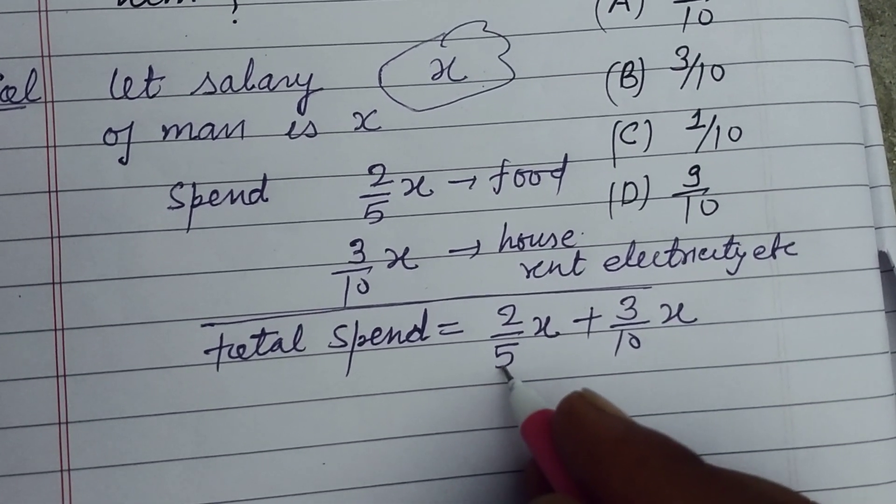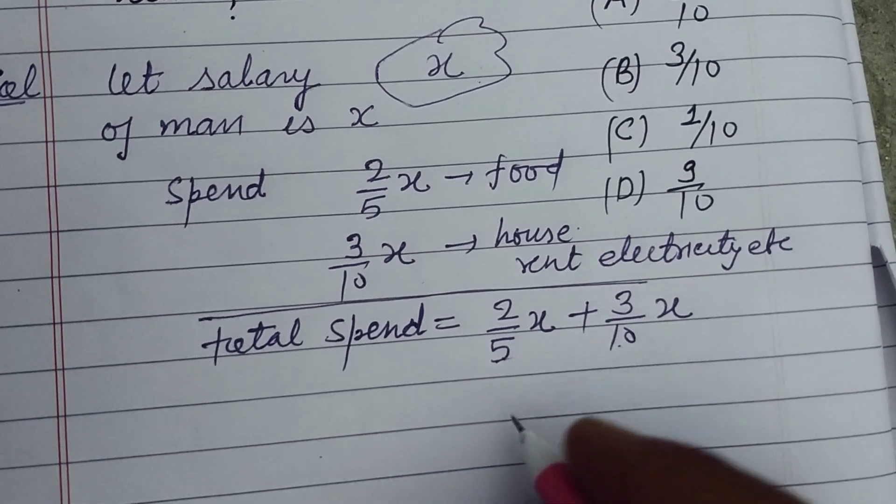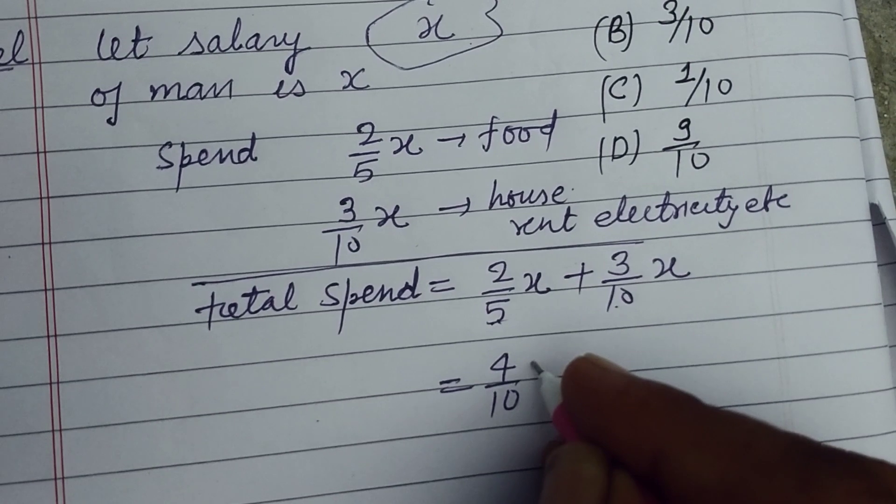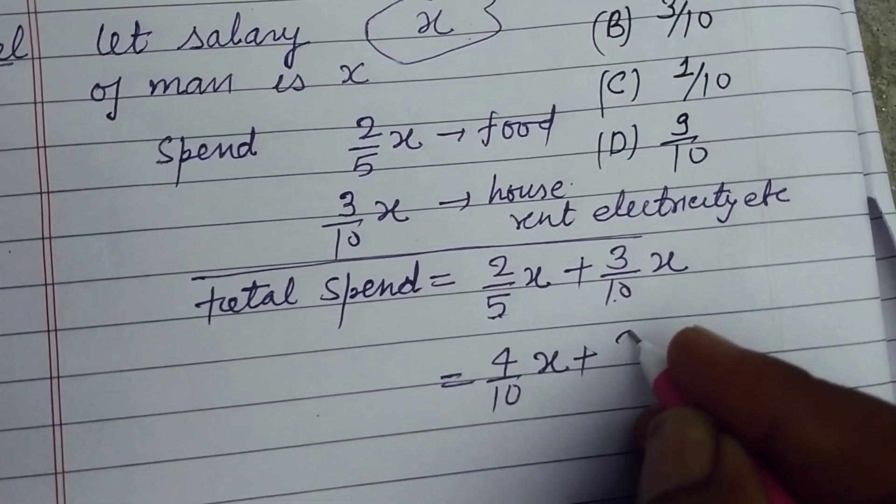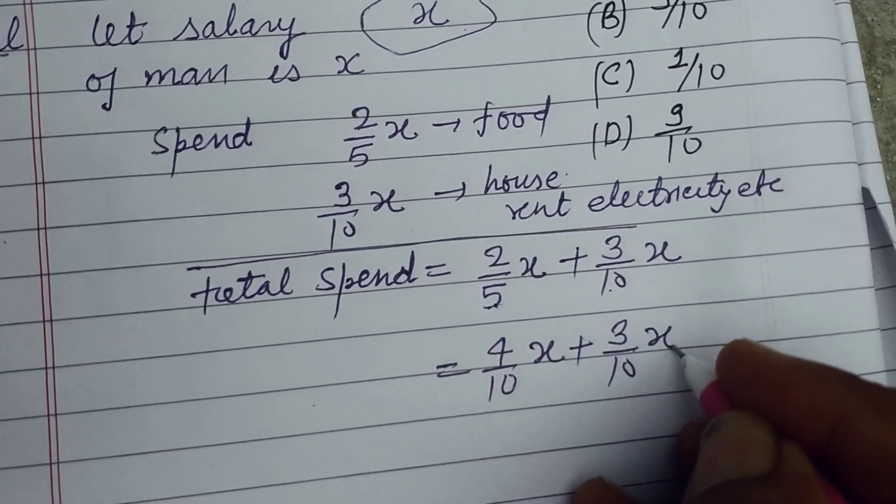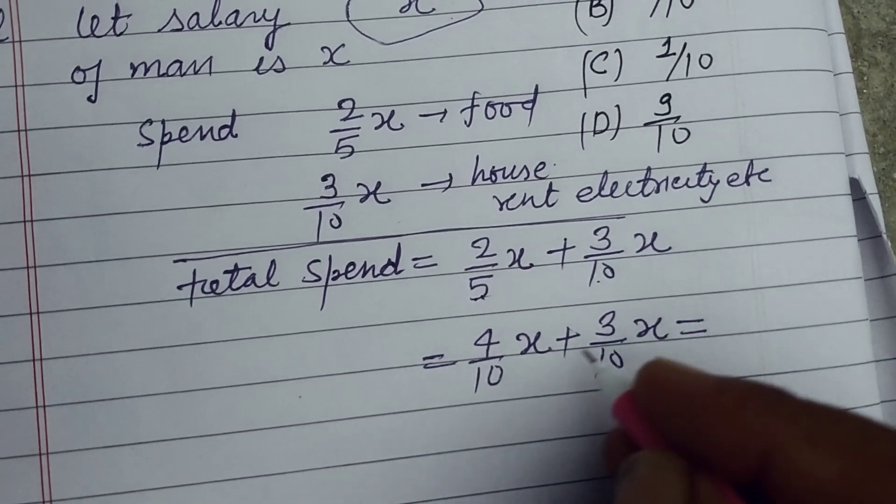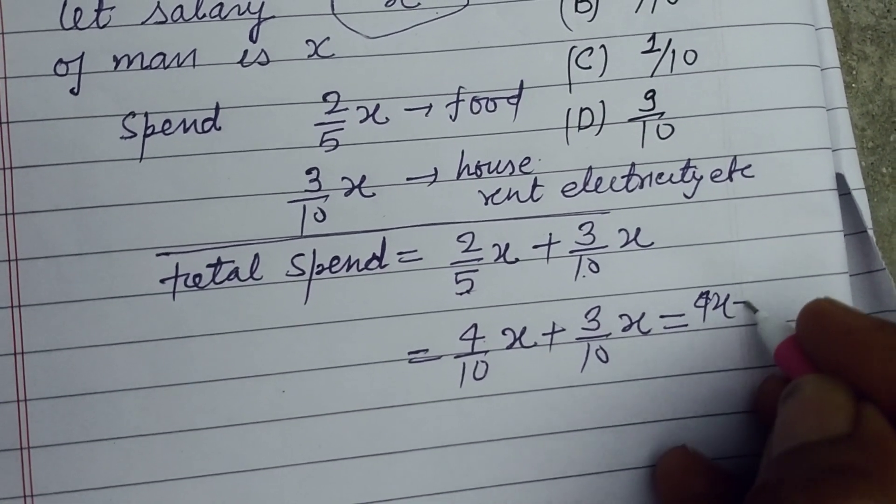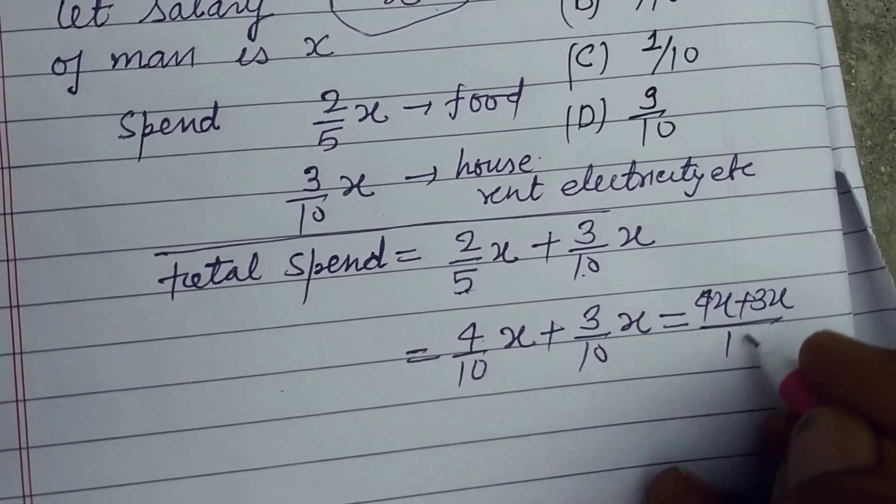So total spent equal to 2 upon 5 x plus 3 upon 10 x. Now we make the denominator same. So we multiply this by 2, 2 to 4 and 2 to 5 to 10 x and this is 3 by 10 x. Now denominator same.